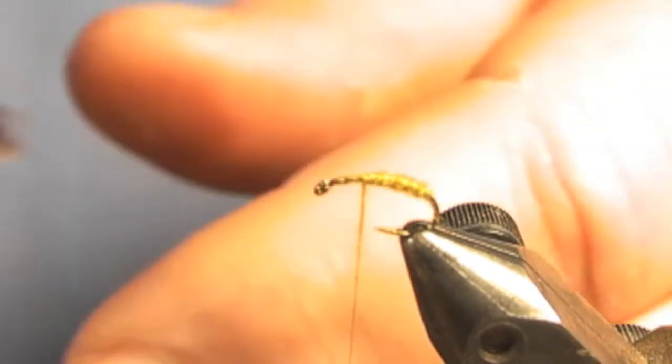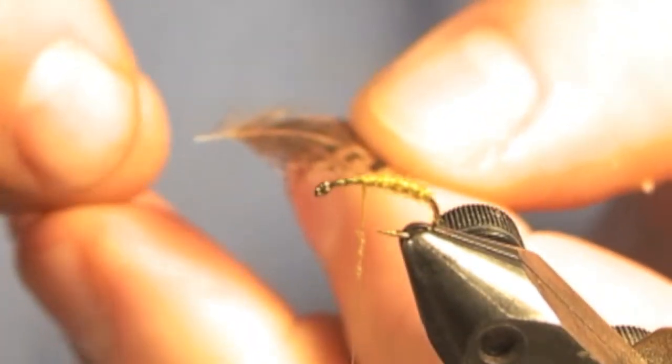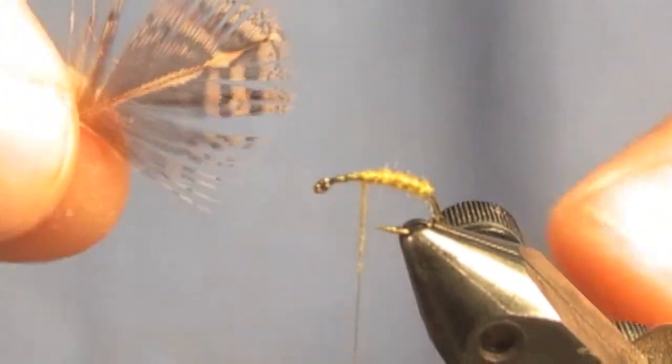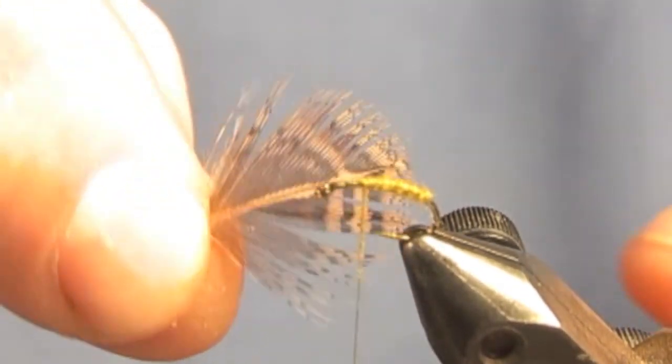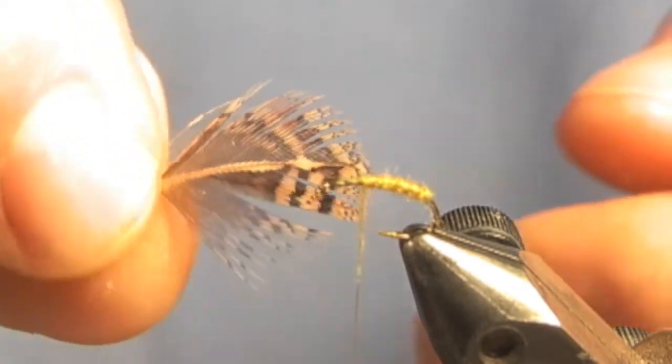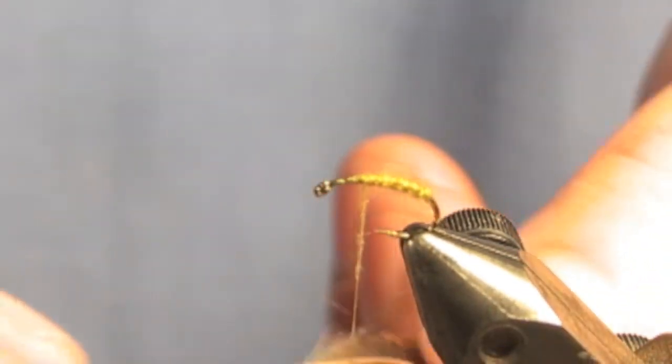I don't know if this is the best way to do it, but it's how I like to do it. This is a grouse feather, just a regular body feather. Usually you use these for soft hackles. I peeled off the duff.